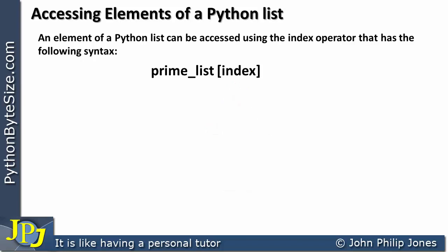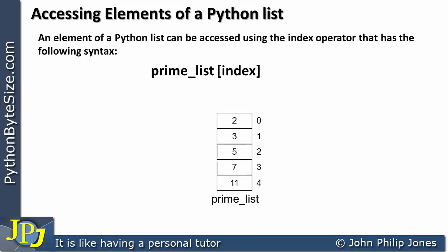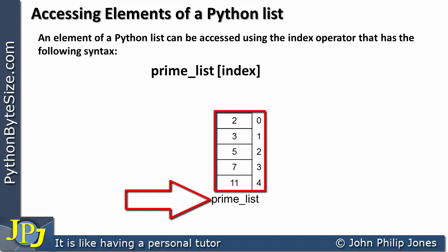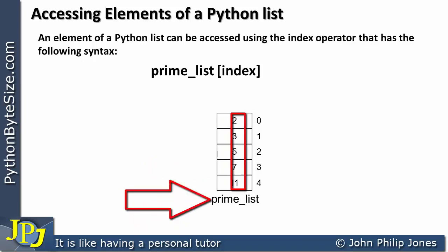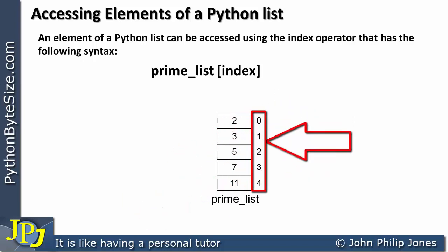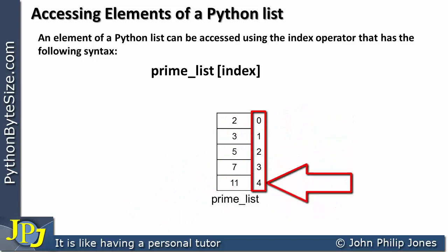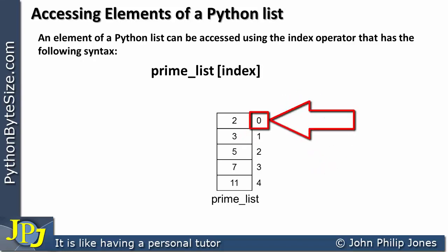Consider the following example of a list in Python. We have the name prime_list, a 5-element list with the content 2, 3, 5, 7 and 11 — examples of prime numbers, that's why I've called the list prime_list. The index starts at 0 and goes up to 4, so index 4 is actually referencing the 5th element, because we always start the index at 0.